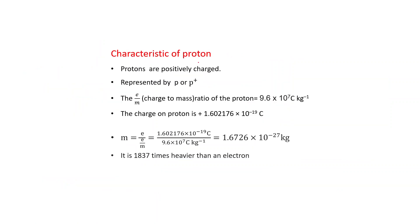Characteristic of proton. Protons are positively charged, represented by P or P plus. The E by M, that is charged to mass ratio of proton, is 9.6 into 10 to the power 7 Coulomb per kilogram. The charge on proton is plus 1.602176 into 10 to the power minus 19 Coulomb. See this magnitude is same as that of charge on electron. Only difference, this is positive and charge on electron is negative. We can also find out the mass of proton by using E divided by E by M. Put the value and this will come 1.6726 into 10 raised to the power minus 27 kilogram. It is 1837 times heavier than an electron.